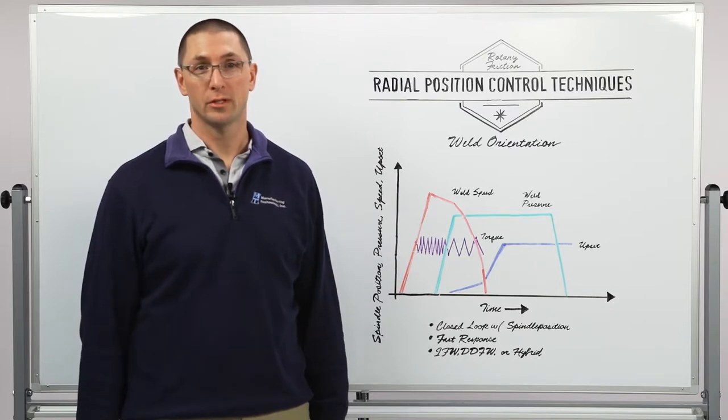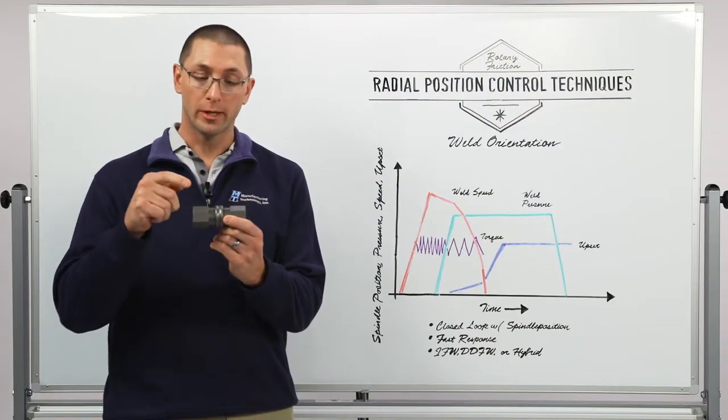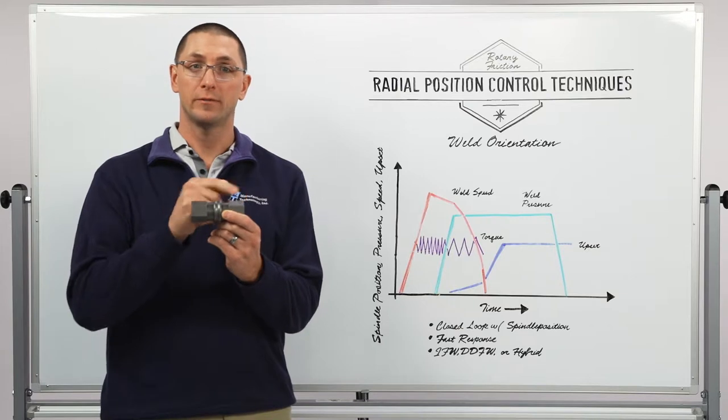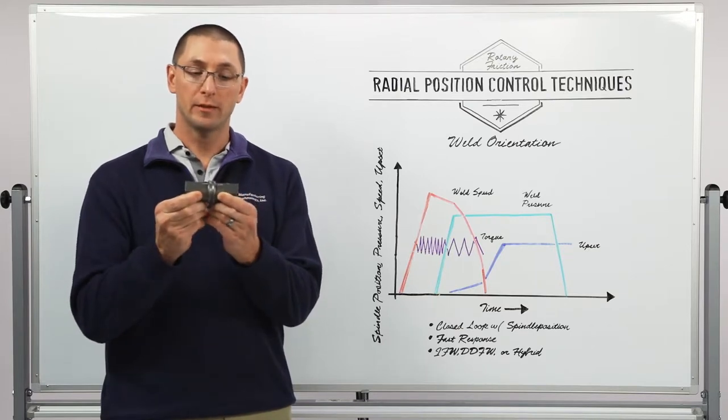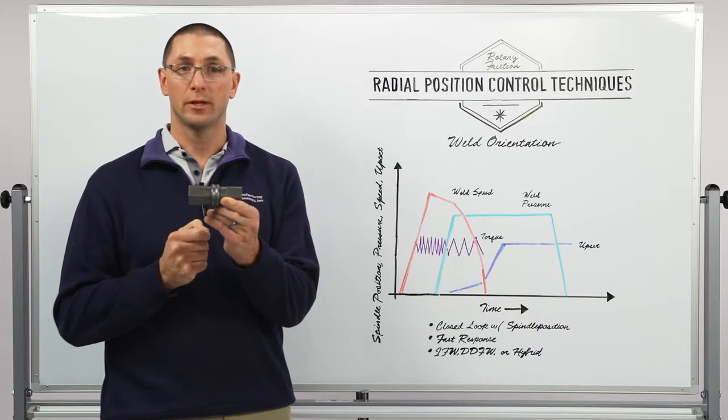Today we're talking about radial position control techniques, or weld orientation. So I have two parts that when I'm done welding I want to orient radially one part relative to the other. So we've demonstrated this by welding two hexes and orienting the flats relative to each other.